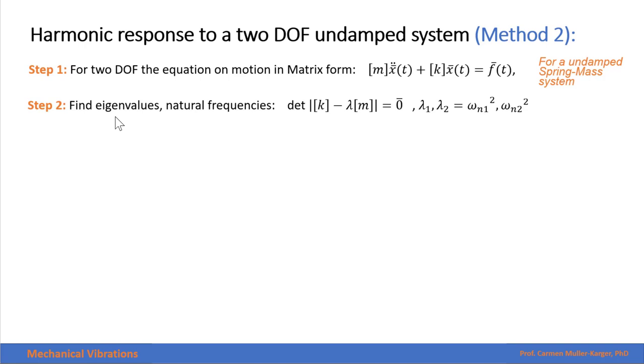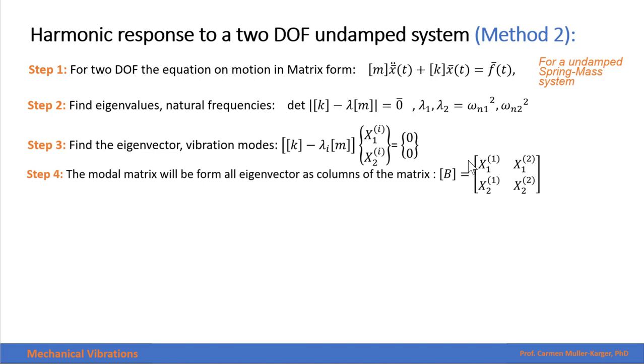The second step is to get the eigenvalues, which represent the square root of the natural frequencies of the system. We get the eigenvectors, which are the vibration modes. That allows us to get the modal matrix, which are the columns representing each of the vibration modes.